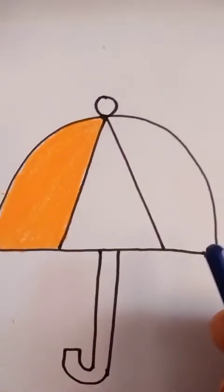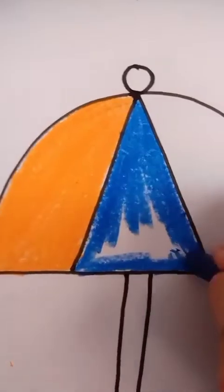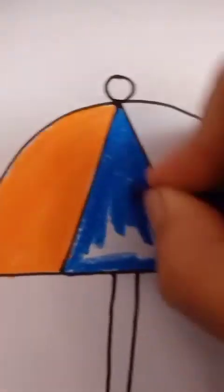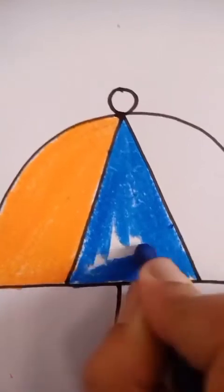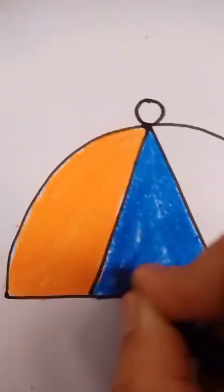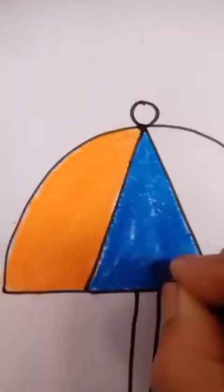Now I am taking blue color. I will color this part blue. Like this. You have to do dark, dark colors. Okay? Don't leave any white space. You have to do dark, dark colors and no white space should be left.